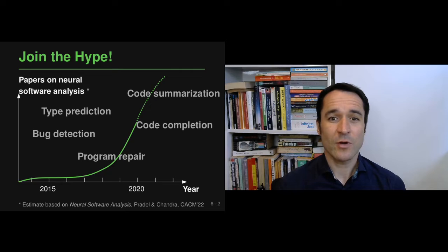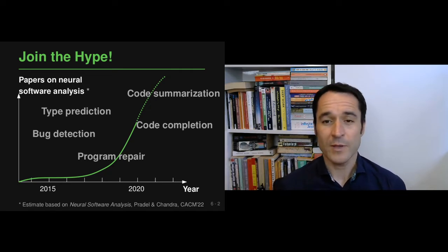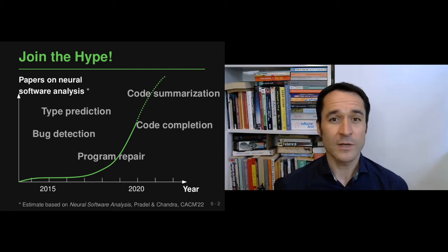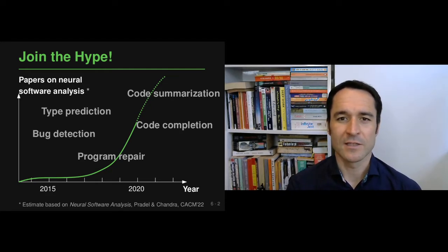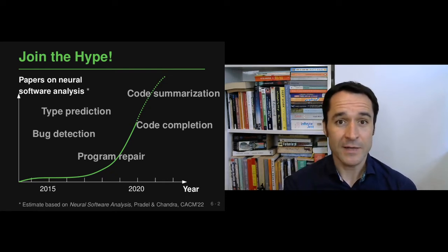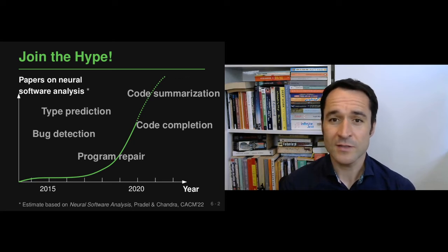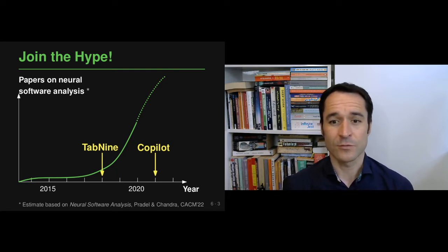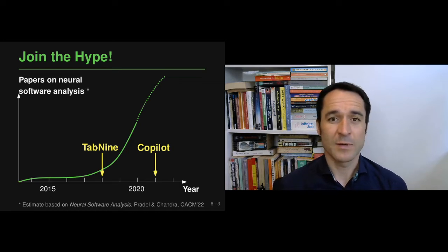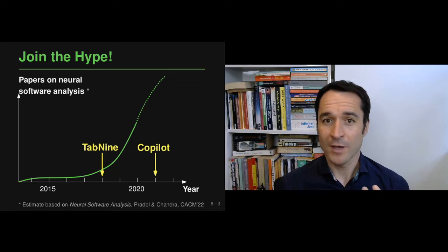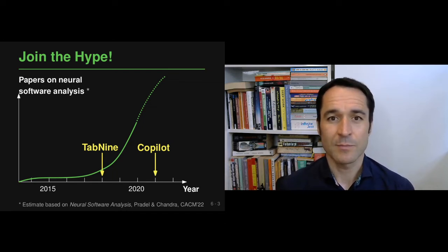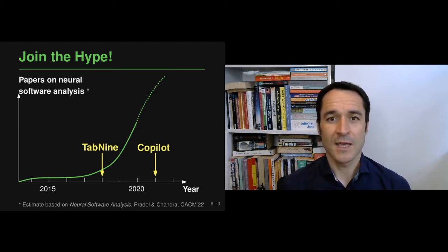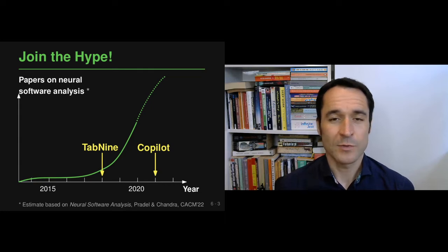People have been looking at many different problems, including type prediction, bug detection, program repair, and code summarization and code completion. Neural software analysis has already found its way into practice. Just to give two examples: TAP9, released in 2018, and Copilot, released a bit more than a year ago. Both are trained on lots of source code and help developers as code completion systems integrated into an IDE, using a predictive model to predict the next piece of code a developer is most likely to write.